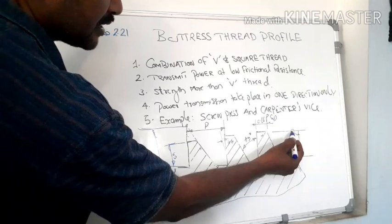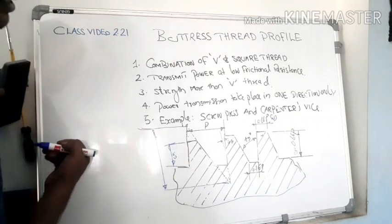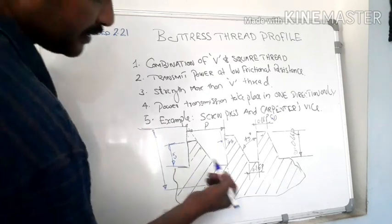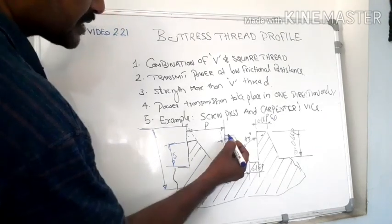And H3 parameter is marked here, that is represented in terms of P. That value is 0.66 pitch. That is our H3 distance - depth of the thread.